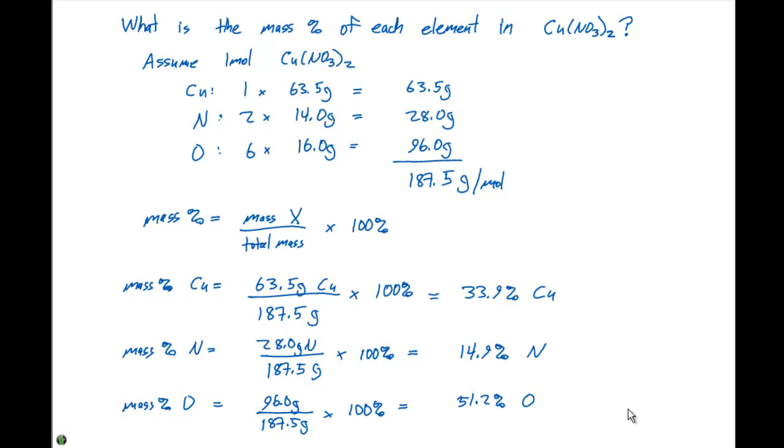So to recap, if you're ever asked to determine the mass percent of each element in a particular complex, assume you have one mole of the substance, calculate its molar mass. Then to get the mass percent, you take mass of the component x divided by the total mass. So we take the mass of the copper, the nitrogen, and the oxygen respectively in each case, divide them by the total mass or the molar mass of the entire compound, multiply each of those by 100%, and that will give you the percents that are listed here on the right.